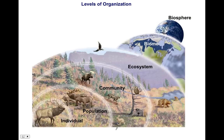Ecologists can study at different levels of organization: the individual level — just one individual species; a population — many of the same species within a defined area; a community — all the living things within a defined area; an ecosystem — which includes non-living things such as water, air, and soil along with all populations of living things; and a biome — many ecosystems making up a larger region with similar dominant communities.